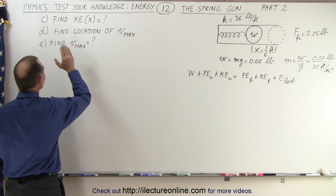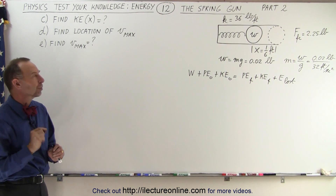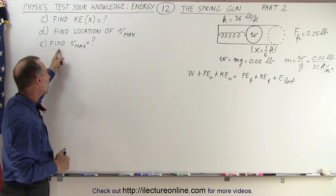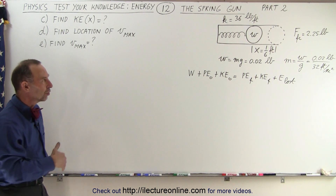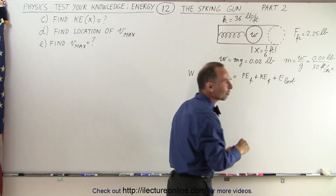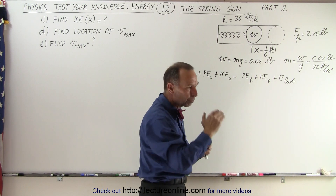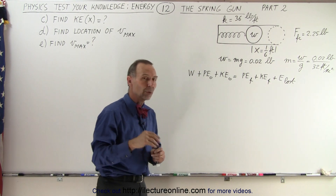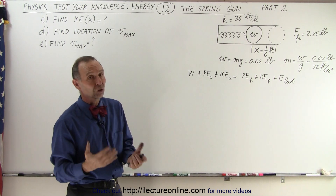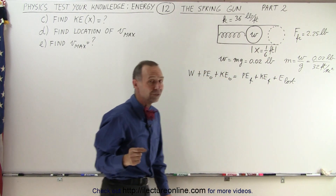What we're trying to do is find an equation that gives us the kinetic energy of the bullet as a function of position. We're trying to find a location where the velocity will be maximum and then find out what that maximum velocity is. As the spring is compressed, the friction force will at some point become greater than the spring force and the bullet will begin to slow down before it leaves the barrel. We already know that with friction the speed at which it leaves the barrel is 20 feet per second, so the bullet will travel faster somewhere between the starting point and where it exits.